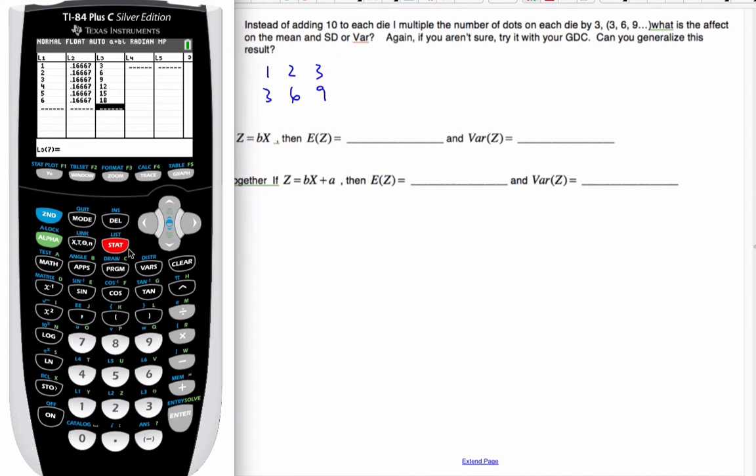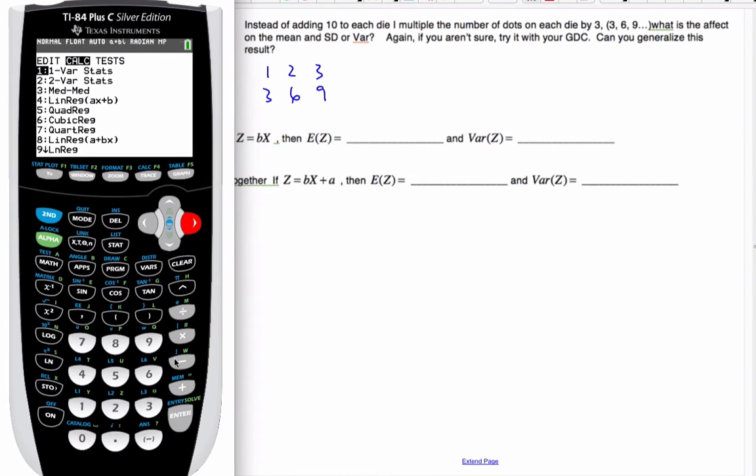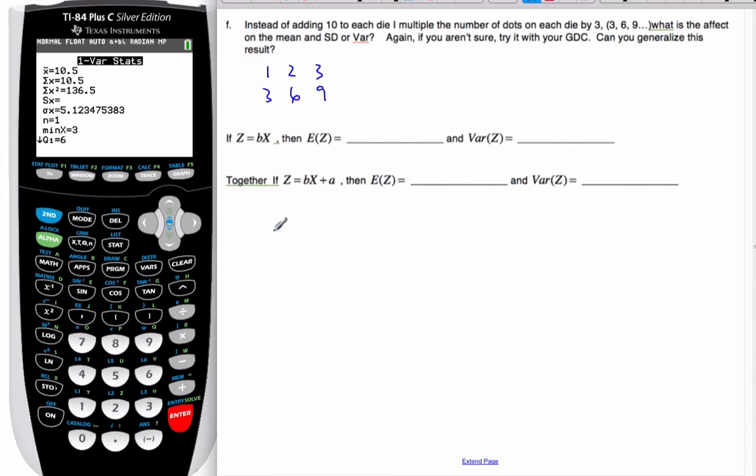Alright so let's do it. So if I'm going to calculate one variable statistics, those are all correct now. And my x bar is now 10.5 and my standard deviation is 5.1234. So they both changed.